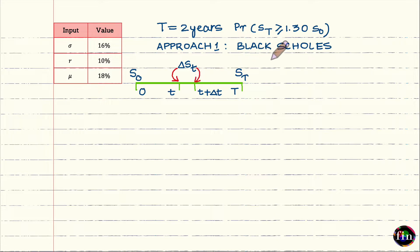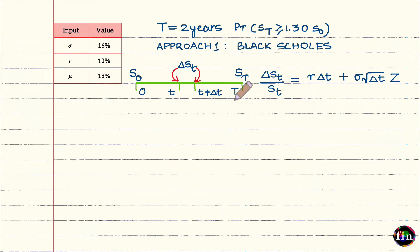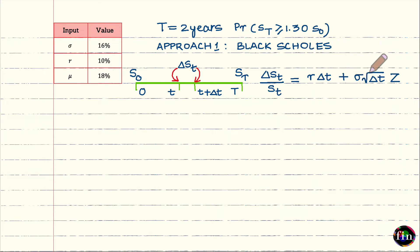The Black-Scholes model assumes that the stock price evolves continuously over time according to the Geometric Brownian Motion (GBM) assumption. The GBM assumption says: delta-S-t over S-t equals R times delta-t plus sigma times the square root of delta-t times Z, where Z is a standard normal variable with mean 0 and variance 1.